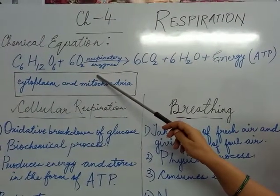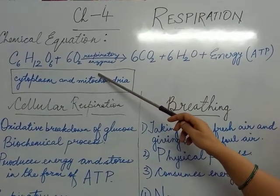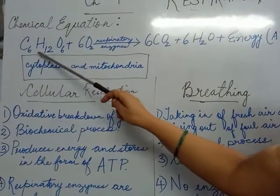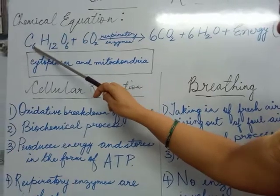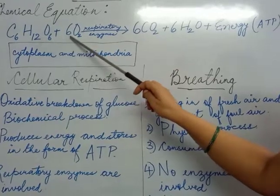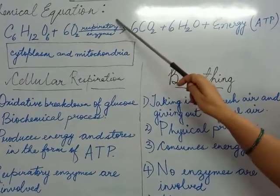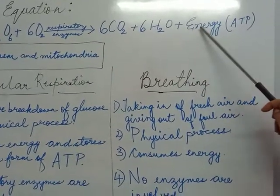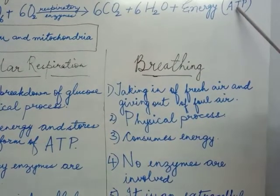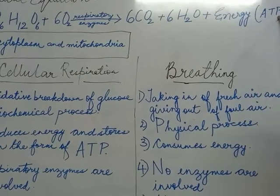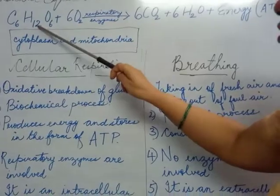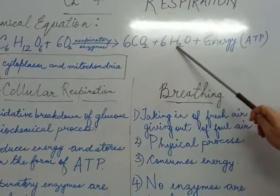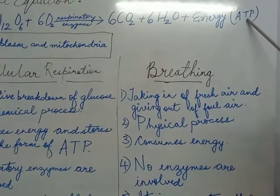In the last class, I taught you the word equation of respiration, and in this class I will explain the chemical equation of respiration. On the board you can see: C₆H₁₂O₆ (glucose) plus 6 molecules of oxygen, in the presence of respiratory enzymes, produces 6 molecules of carbon dioxide and 6 molecules of water vapor, and a huge amount of energy is evolved which is stored in the form of ATP — adenosine triphosphate. So, glucose plus oxygen in the presence of enzymes gives out carbon dioxide plus water vapor and energy, and this energy is stored in the form of ATP.